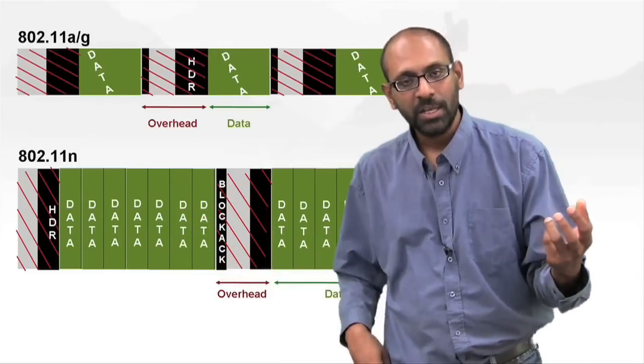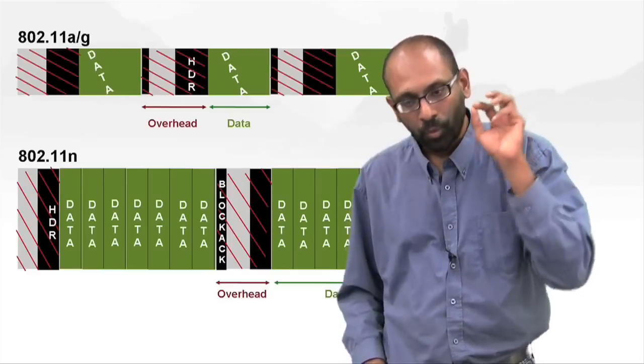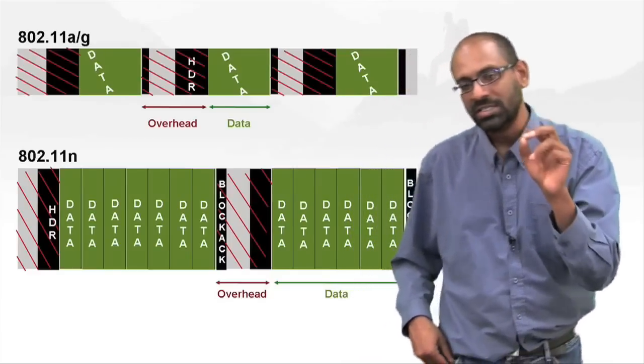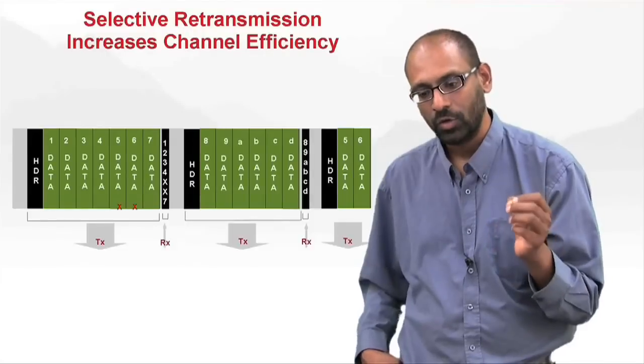Because you are contending less, you can afford to be more conservative in terms of how you resolve contention. So both of these mechanisms or both of these concepts really help in increasing the channel utilization or efficiency of 802.11n.